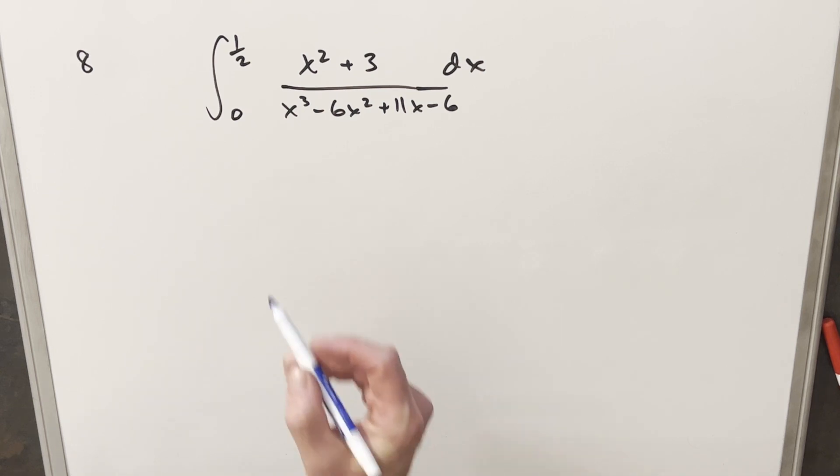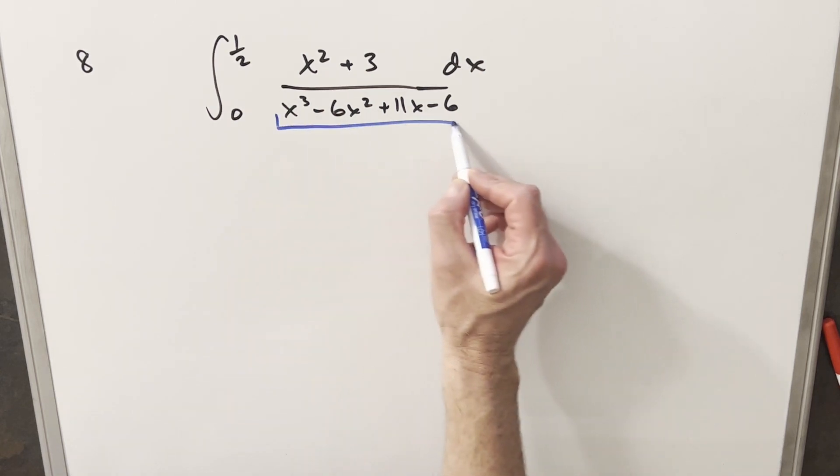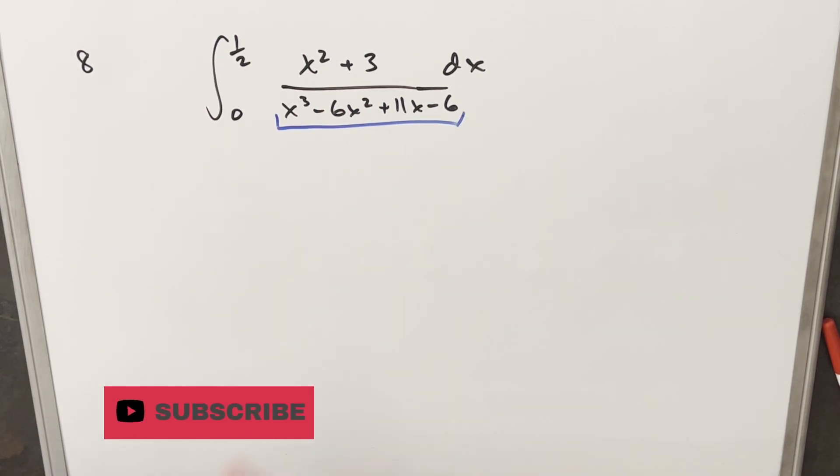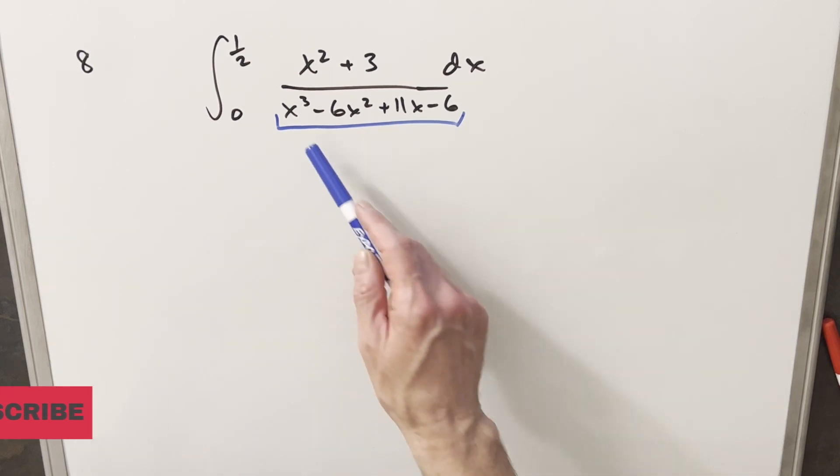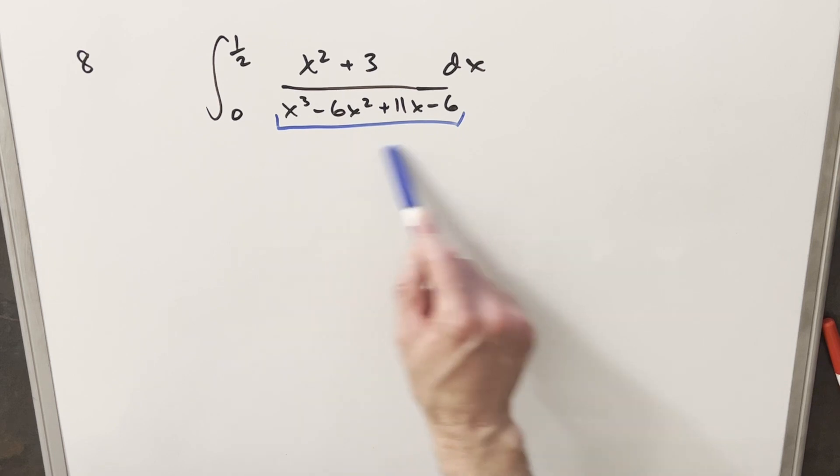My first thought is we're really going to need to factor something. The question is, is this denominator factorable? There's something about 6 and 11 that seems kind of suspicious. One thing to notice is if you just add up all the coefficients going across here, you get 0. That tells me that 1 would be a zero of this polynomial.